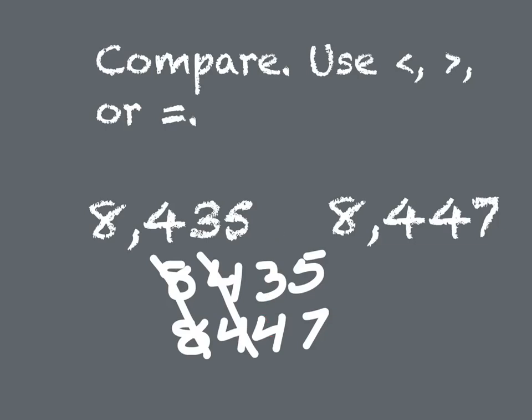And I notice that 8,435, there is a 3. And 8,447, there is a 4. So that means this number right here is larger. So we're going to go back up and we're going to say 8,435 is less than. Again, we draw it so that the open mouth is facing the larger number. 8,435 is less than 8,447.